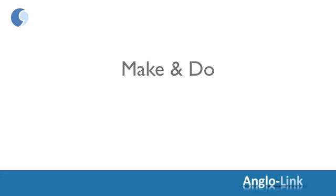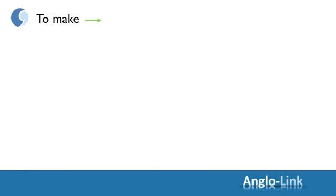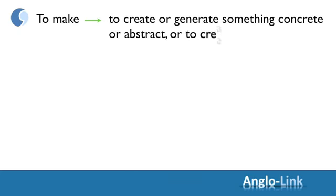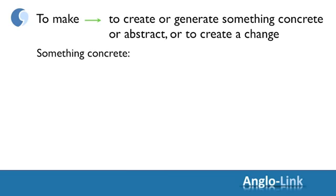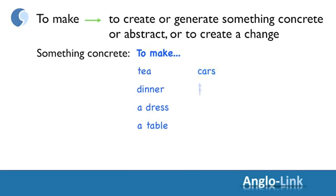By the end of this video, you will have a good grasp of how to use these two verbs correctly and you will learn some phrasal verbs and expressions with them as well. So, when you're ready, we can begin. Make and do. Let's start with the verb to make, which is to create or generate something concrete or abstract, or to create a change. For example, to make tea, make dinner, make a dress, make a table, make cars, make televisions, etc.